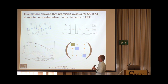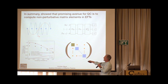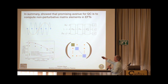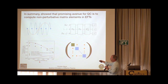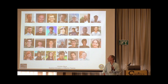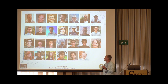In summary: effective field theories have the property that by looking at the right distance scales and limiting yourself to the relevant degrees of freedom, you can make your problem much simpler. I showed that we can construct circuits implementing such problems, run them on existing devices, and get encouraging results. I speculated on using gauge invariance for noise mitigation. Those are the main messages — thank you.